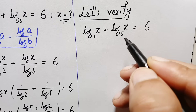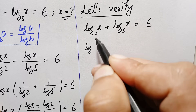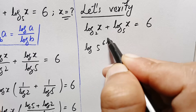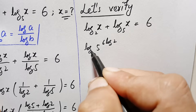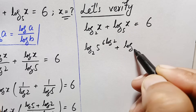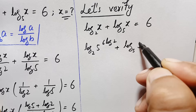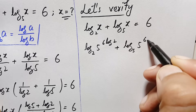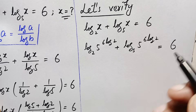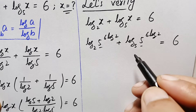We will replace x with this value. The left hand side becomes: log of (5 raised to power 6 times log of 2) with base 2, plus log of (5 raised to power 6 times log of 2) with base 5, is equal to 6.